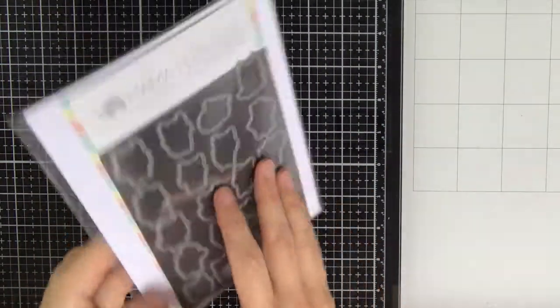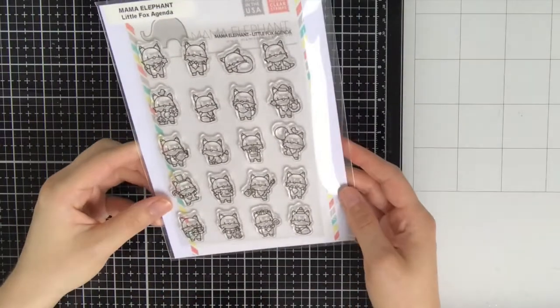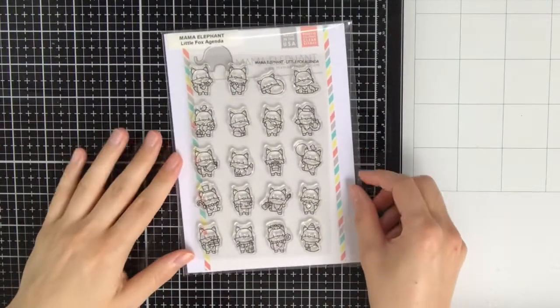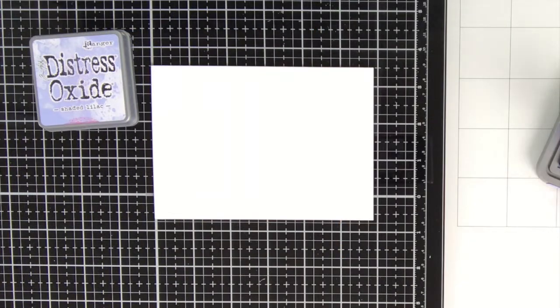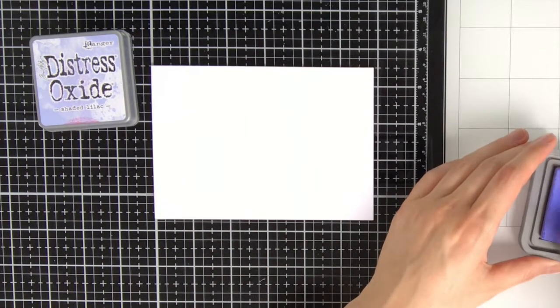I like to store the stamp set together with coordinating dies in a stamp pocket from MFT. Before we go into the stamping and Copic coloring, I'm first going to get started on the background.